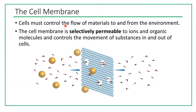A cell must control the flow of material to and from the environment. The cell membrane is not just a barrier between the internal and external environment of a cell — it's a selectively permeable membrane that allows some materials to move through it and prevents others from moving in or leaving a cell. Cell membrane is selectively permeable to ions and organic molecules and controls the movement of substances in and out of cells.